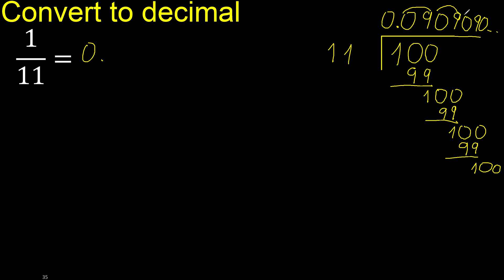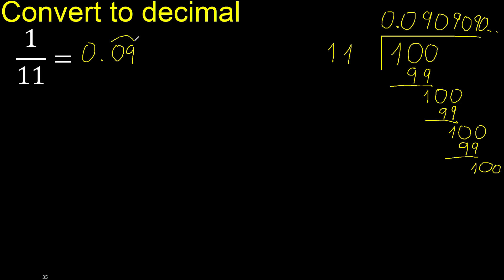The pattern is: nine, zero, nine, etc. Here: zero, nine — repeat. Therefore, like this, the digits repeat: 0, 9, 0, 9... and so on. Repeat — ok — finish.